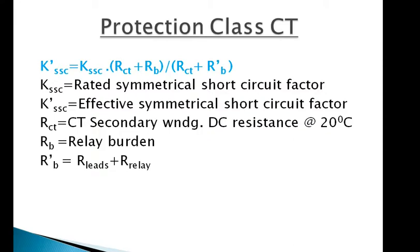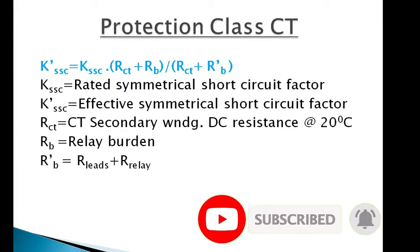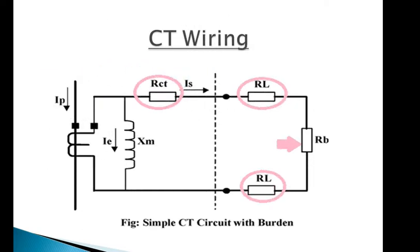Protection CT dimensioning is done as per the IEC formula: K'_ssc (effective symmetrical short circuit factor) equals K_ssc (rated symmetrical short circuit factor) multiplied by (R_ct + R_b)/(R_ct + R'_b), where R_ct is the CT secondary winding DC resistance at 20°C, R_b is the relay burden, and R'_b is the resistance of leads and relay.